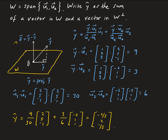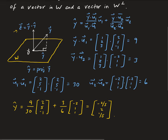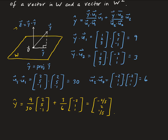y-hat is living in the span of W, because y-hat is a linear combination of u1 and u2. So everything's coming together — all those theorems from chapter 1 play a big role here.